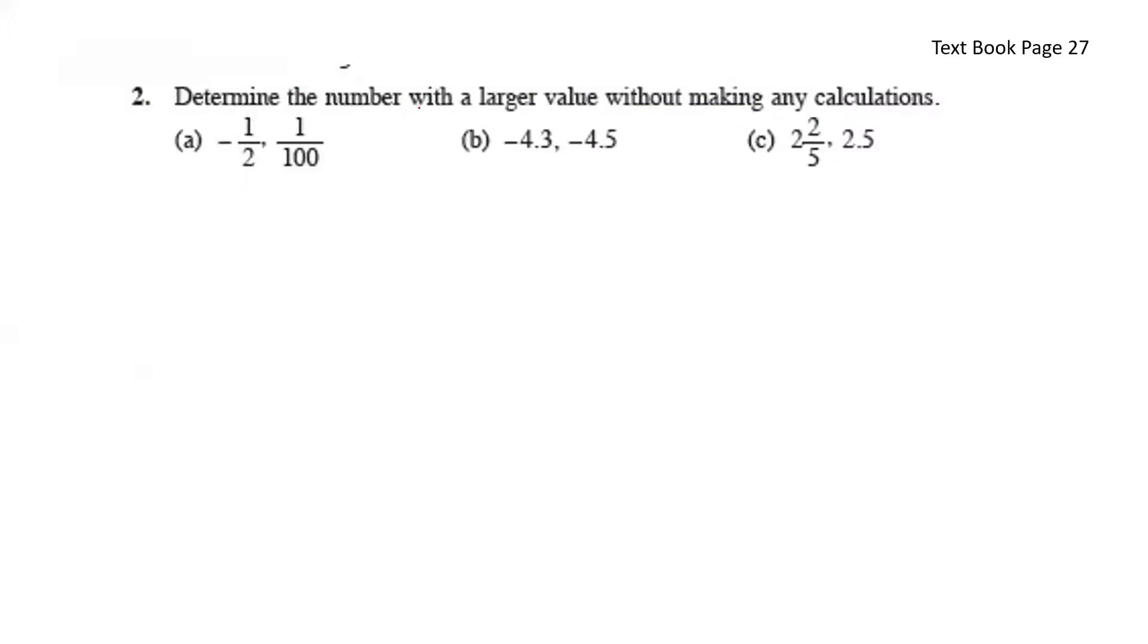Determine the number with a larger value without making any calculations. For A, we have negative 1 over 2 and 1 over 100. Negative is definitely the smaller number, so this makes it a larger number.